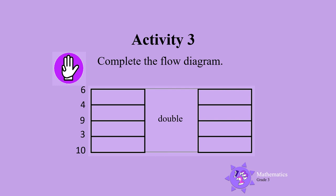Let's complete another flow diagram. What do we have to do in this flow diagram? This time we have to double the numbers. Let's start with 6. Double 6 is 12. Double 4 is 8. Double 9 is 18. Double 3 is 6 and double 10 is 20.